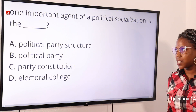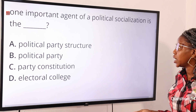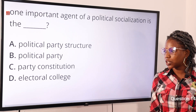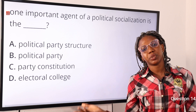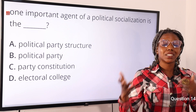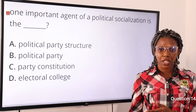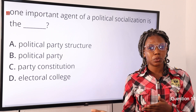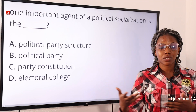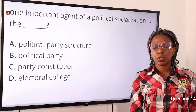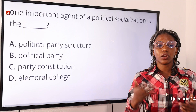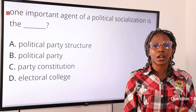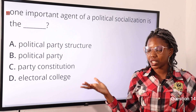Question fourteen: one important agent of political socialization is the — option A: political party structure, option B: political party, option C: party constitution, option D: electoral college. The answer is option B, political party. Political socialization is the process of acquiring political beliefs, values, and attitudes to shape political behavior. Agents include family, religion, schools, colleges, and political parties, which operate through campaign rallies and civic education.